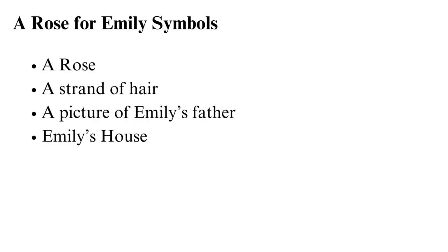Some of the symbols in A Rose for Emily include the rose. The title of the book is A Rose for Emily, and what many readers find hard to understand is what the rose means. The word rose is more of an irony — a rose is a symbol of love and beauty, while the story is filled with dark and tragic aspects of Emily's life.